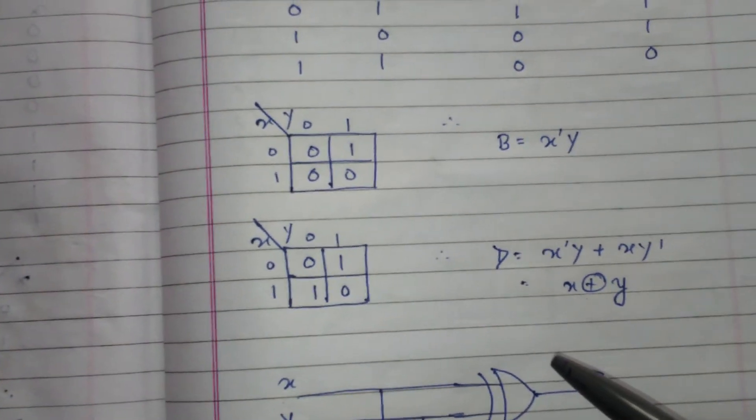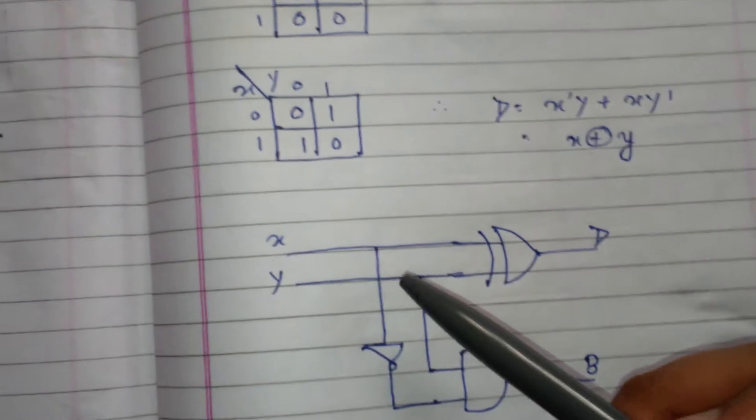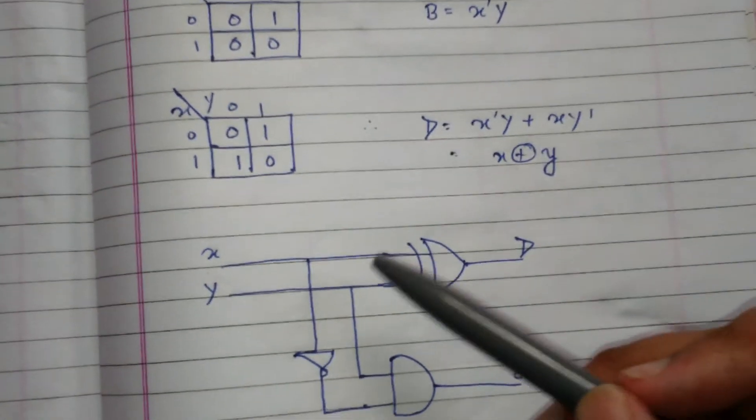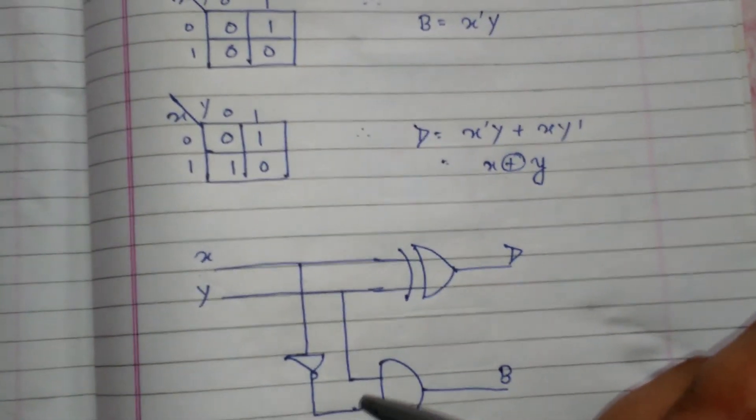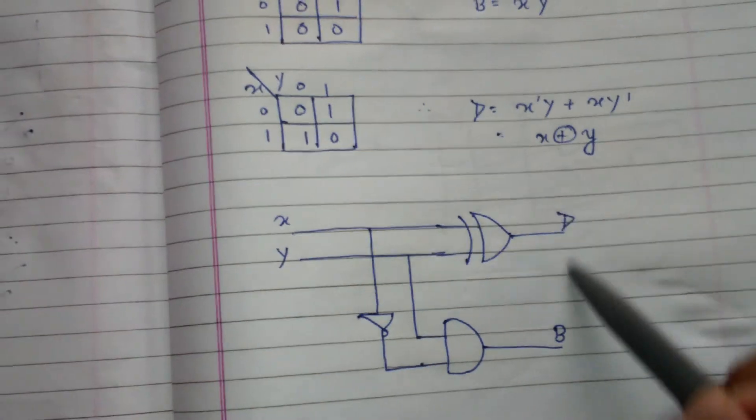Next, simply we will implement it using logic gates. I have made a diagram using logic gates with two inputs X and Y. By XORing them we will get the difference. And here I have X complement ANDed with Y to obtain the borrow. Now this whole circuit is known as a half subtractor circuit.